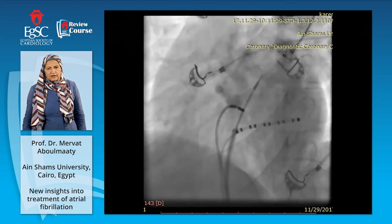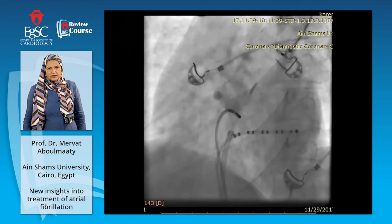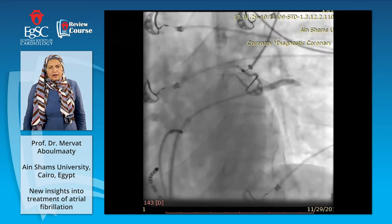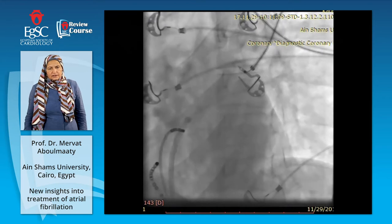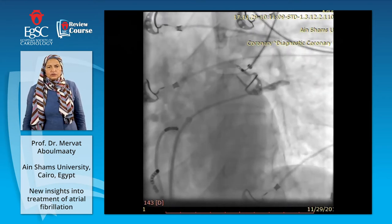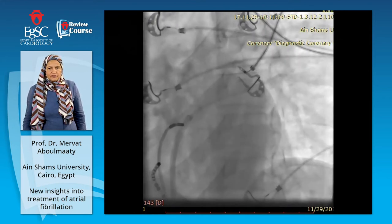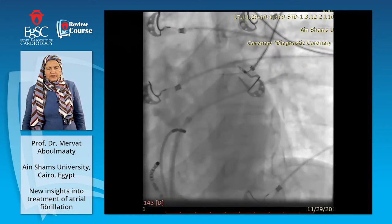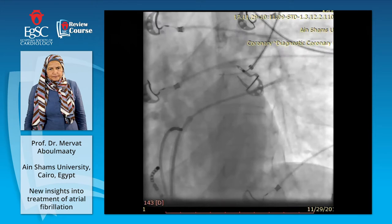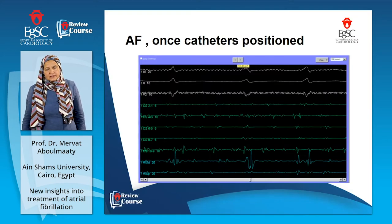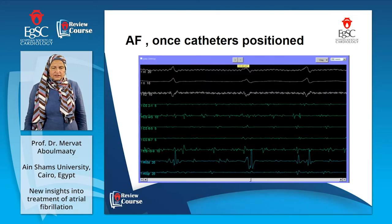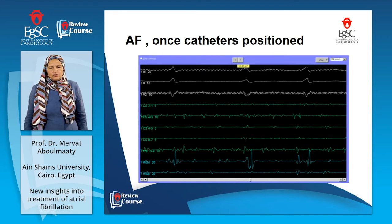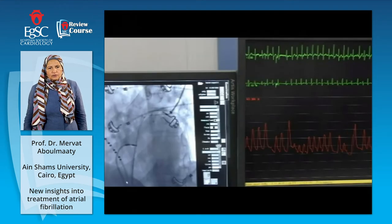You can see the CS is in place, the quadripolar catheter and the His catheter in the His position. We still have the regular sheath. We wanted to make sure of the anatomy of the veins, so we injected contrast with a multipolar catheter into the left superior pulmonary vein. The patient went into AF with catheter manipulation, which is common. Then we decided to cardiovert him.